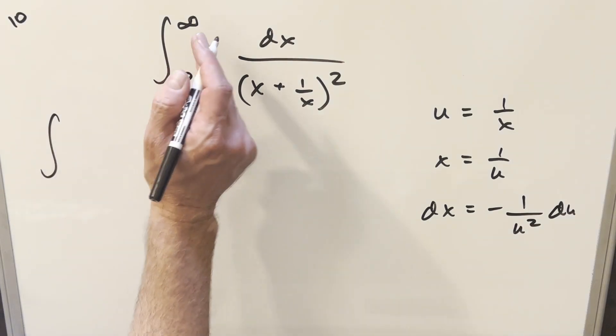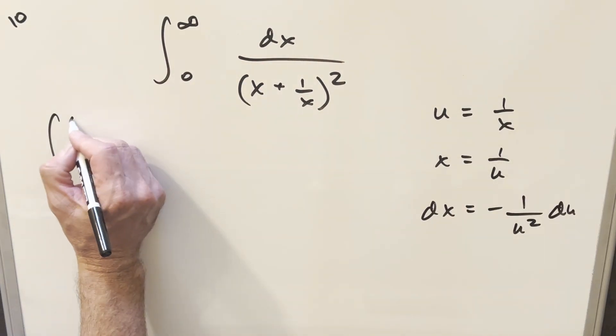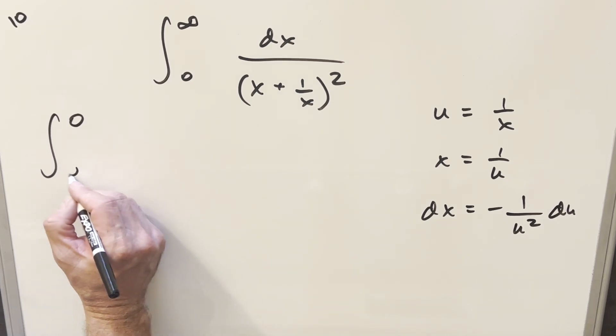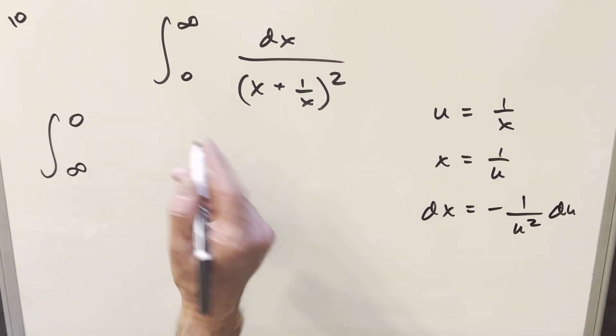Go ahead with the substitution. Plugging in infinity, that's going to be going to 0. And we do that here. You plug in 0, you get infinity. So that's pretty nice. Then for our dx,